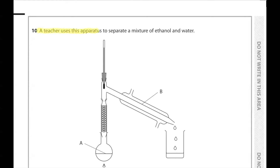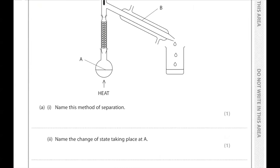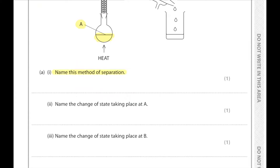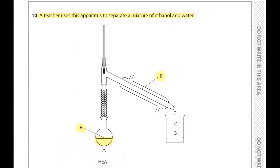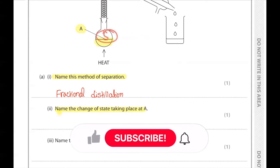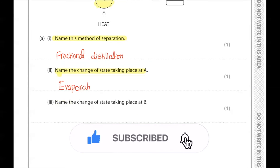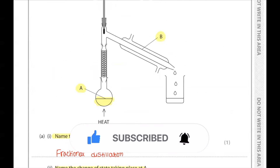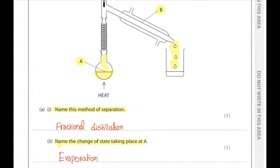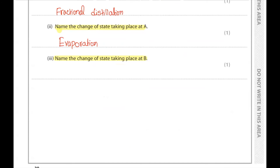Question 10. A teacher uses apparatus to separate a mixture of ethanol and water. We can see liquid being heated at point A and a condenser at point B. This method of separation uses the difference in boiling points between two liquids — ethanol has a boiling point of 78°C and water 100°C — and is called fractional distillation. At point A, evaporation takes place. At point B, condensation takes place as liquid forms from the rising gas.